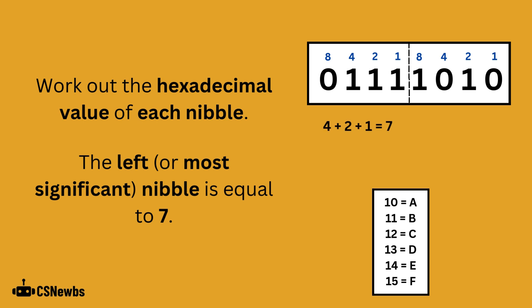Now work out the hexadecimal value of each nibble by adding together the place values with a 1 beneath them. The left or most significant nibble is equal to 7 because 4 plus 2 plus 1 is 7.